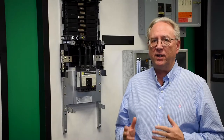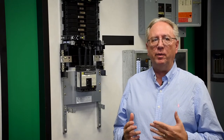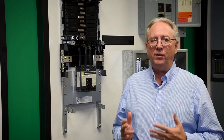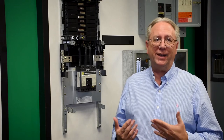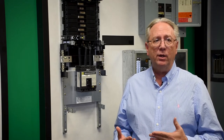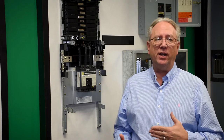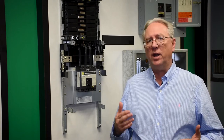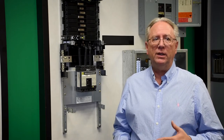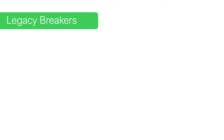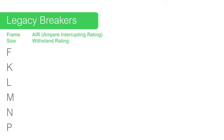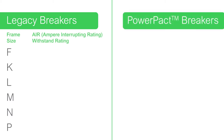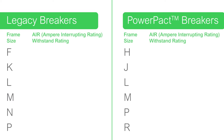So what happens if a contractor calls and needs to replace a breaker? If you have the first two characters of the catalog number, you can quickly identify whether you're talking about a legacy breaker or a power pack breaker. The legacy breakers are F, K, L, M, N, P. The power pack breakers are H, J, L, M, P, R.